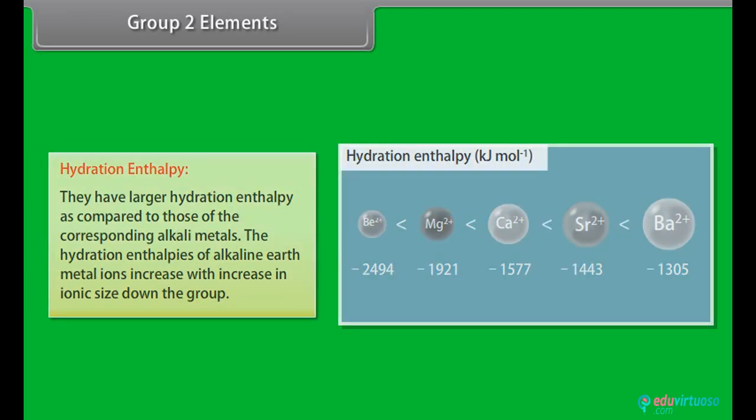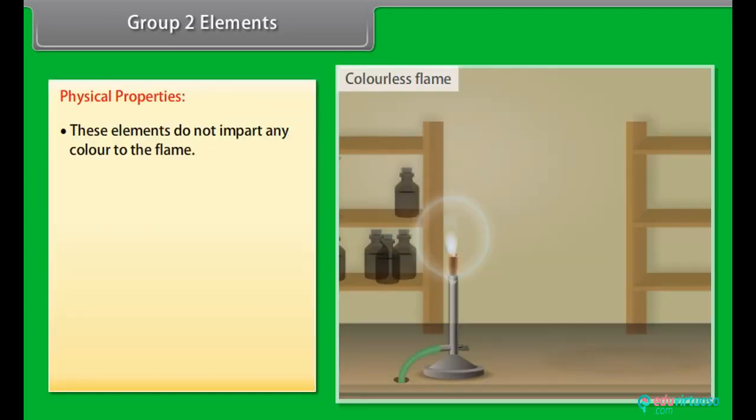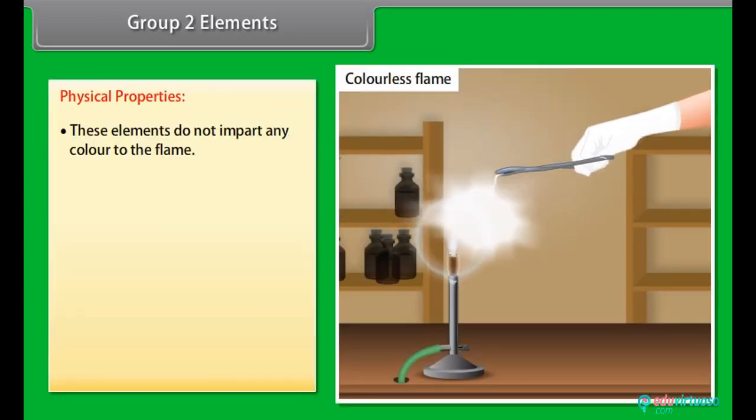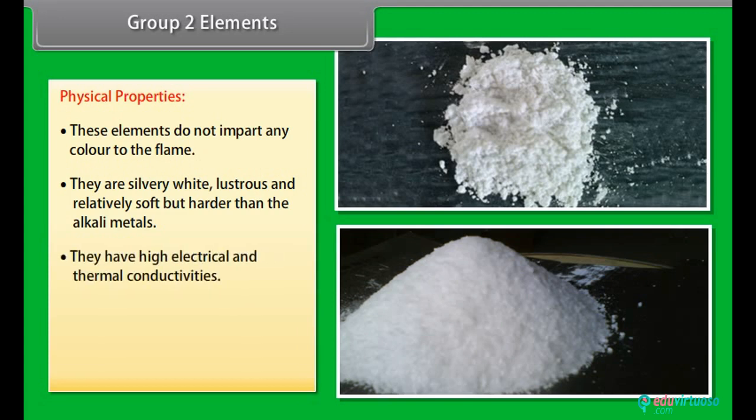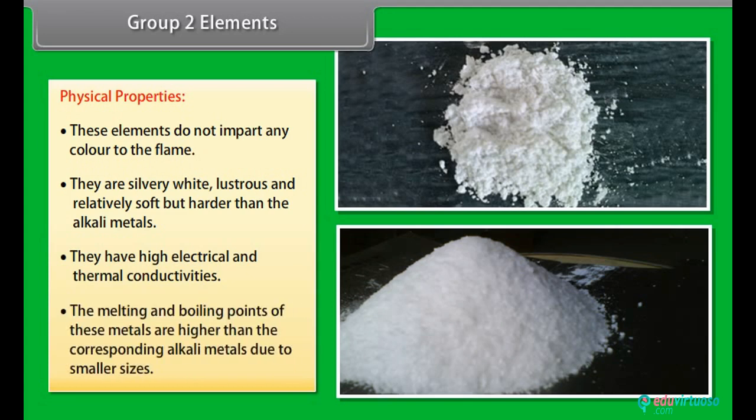Physical properties: These elements do not impart any color to the flame. They are silvery white, lustrous, and relatively soft but harder than the alkali metals. They have high electrical and thermal conductivities. The melting and boiling points of these metals are higher than the corresponding alkali metals due to smaller sizes.